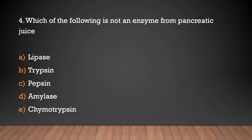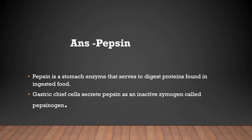Which of the following is not an enzyme from pancreatic juice? Lipase, trypsin, pepsin, amylase, or chymotrypsin? The answer is pepsin. Pepsin is a stomach enzyme — it digests proteins found in ingested food and is secreted by gastric chief cells as an inactive zymogen called pepsinogen.